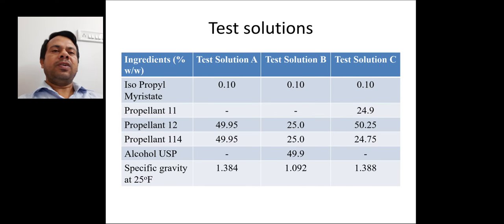Now these are the different compositions of test solution A, B and test solution C. In all these test solutions isopropyl myristate is present in a concentration of 0.1% W by W. Propellant 11 is only present in test solution C in a concentration of 24.9% W by W. Propellant 12 is present in test solution A, 25% W by W, in test solution B and 50.25% W by W in test solution C.